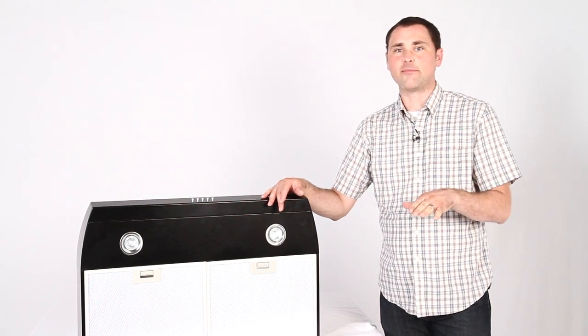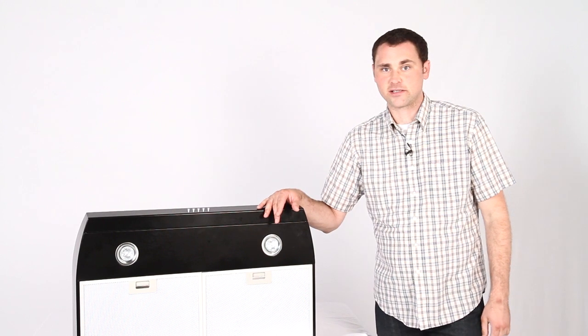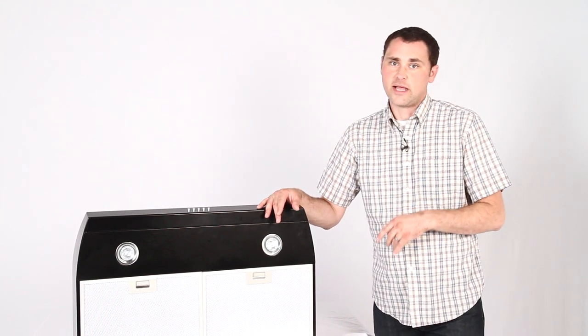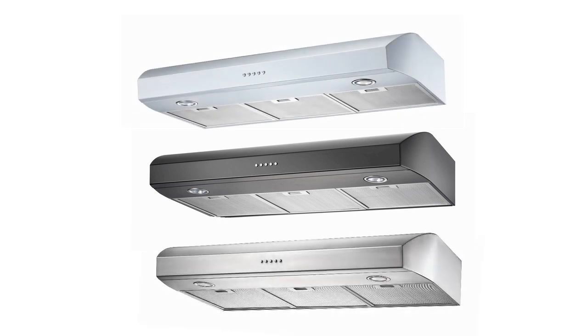This is a range hood that mounts under cabinet and it comes in two different sizes, 30 and 36. This is the 30 inch model. It also comes in three colors. This is the black one, but it also comes in white and brushed stainless steel.